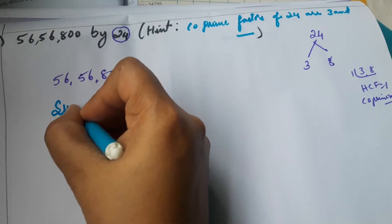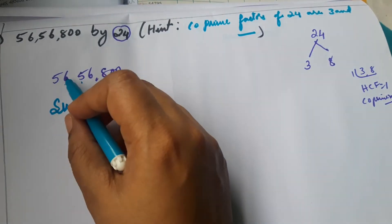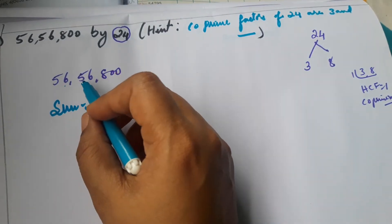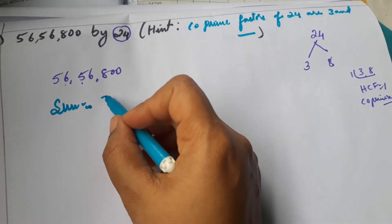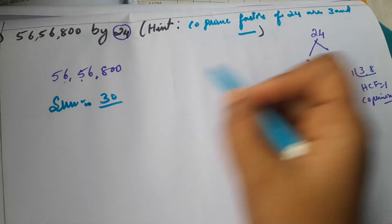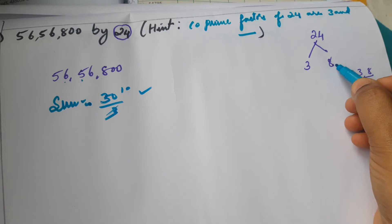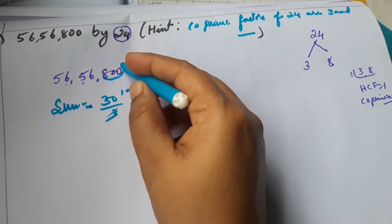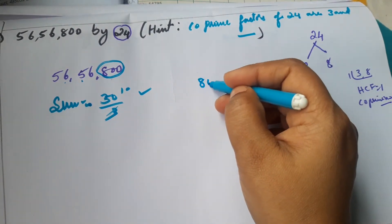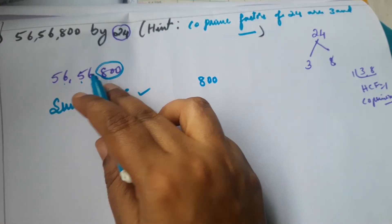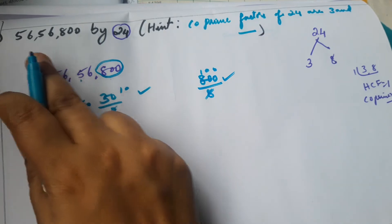Now checking with 3: sum of digits of 56,56,800 — 5+6=11, 11+5=16, 16+6=22, 22+8=30, plus 0, plus 0 = 30. 30 divided by 3: yes, it is divisible. Now checking with 8: according to the rule, the last 3 digits should be divisible by 8.